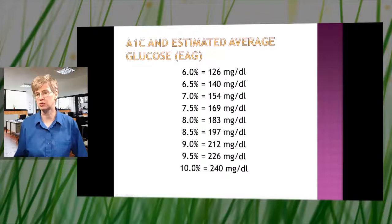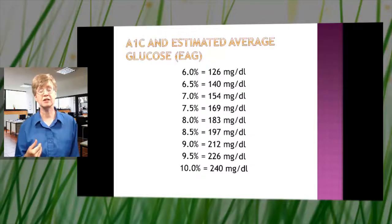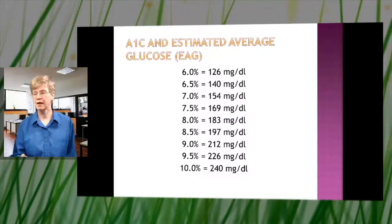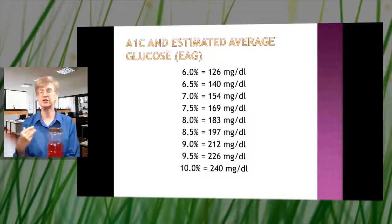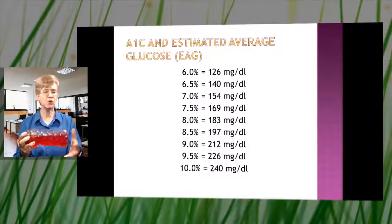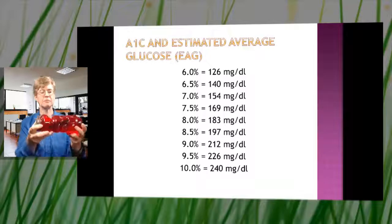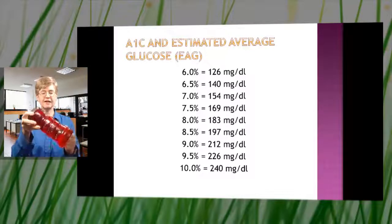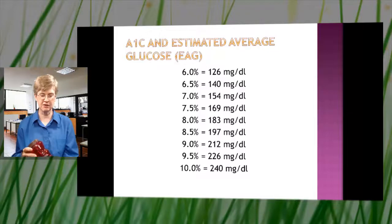The chart also gives you other percentages showing what your A1C would be if your percentage was higher, and what your average blood sugar checks would be if your number was lower. I also like to show people what the A1C might look like. For instance, if this was your blood and your blood sugars were on average less than 154, or less than seven percent, you'll notice that the liquid in this jar is not sticky or gooey. If your A1C was higher than eight percent, your blood might be thicker.